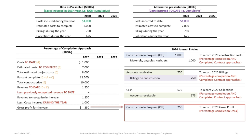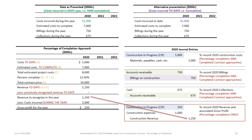We debit Construction in Progress for $250,000 — the gross profit goes onto the balance sheet as part of Construction in Progress. We also debit Construction Expense for $1,000,000 and credit Construction Revenue for $1,250,000. The $1,250,000 is revenue, $1,000,000 are costs, and $250,000 is gross profit. The debit balance difference of $250,000 confirms where the gross profit goes.